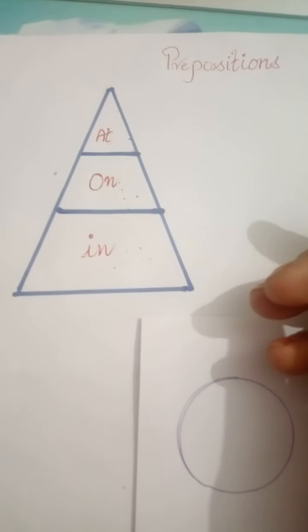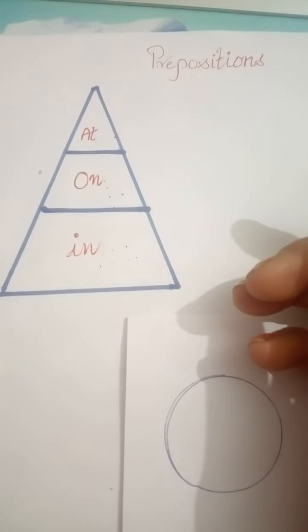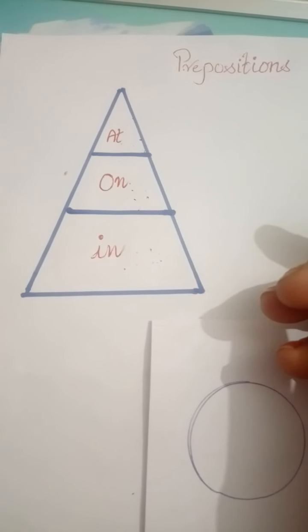Hello students, today we will discuss the use of three prepositions at, on, and in with the help of a triangle.